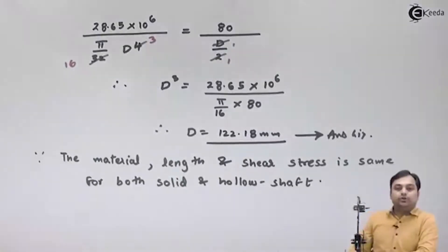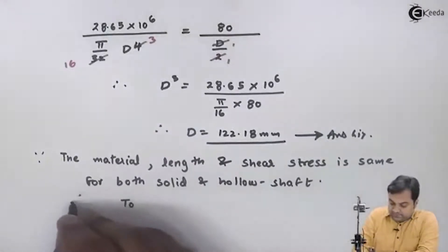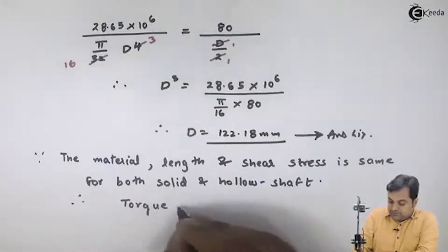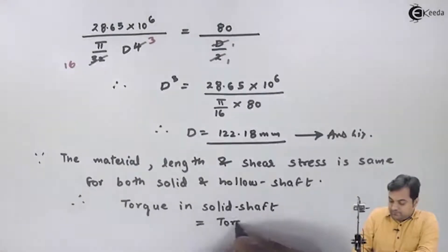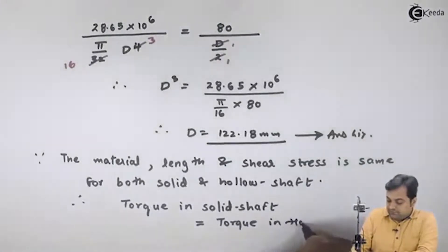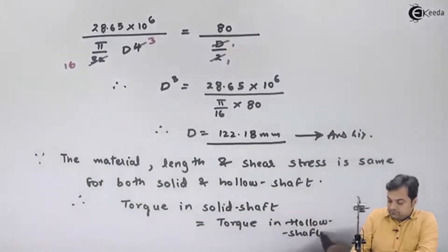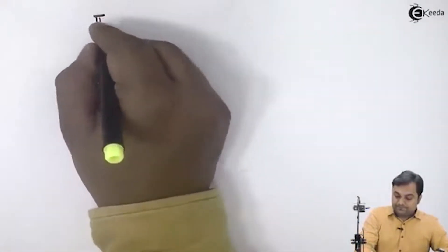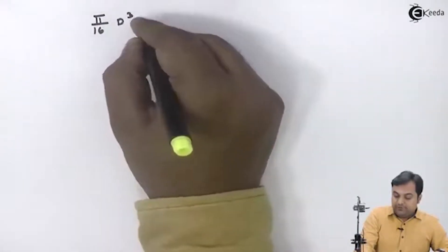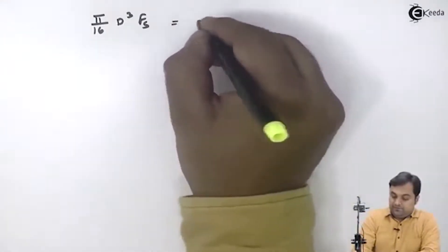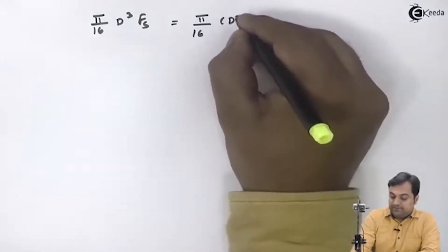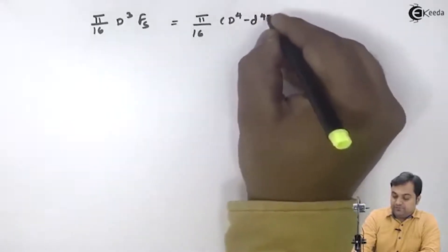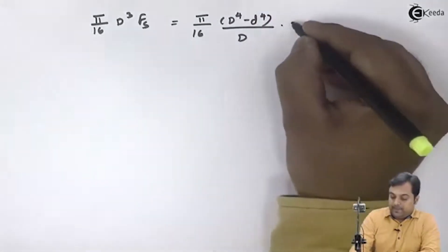...therefore the torque value will also be the same. So, torque in solid shaft equals torque in hollow shaft. The torque in solid shaft is given by π/16 × d³ × fs, and the torque in hollow shaft is given by π/16 × (D⁴ − d⁴)/D × fs.